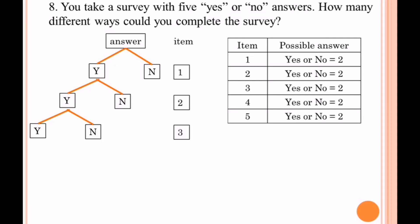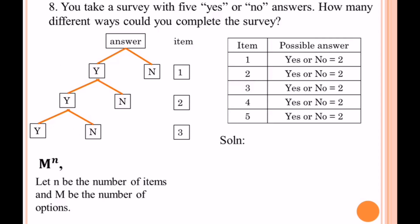Following this pattern, we can apply the formula M to the power of N, where N is the number of items and M is the number of options. In our problem, five is the number of items and two (yes or no) is the number of options. So capital M is the number of options.